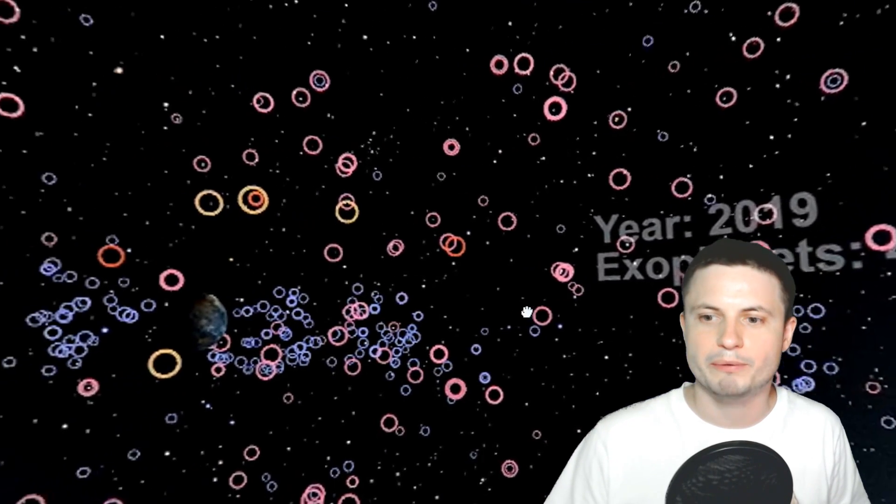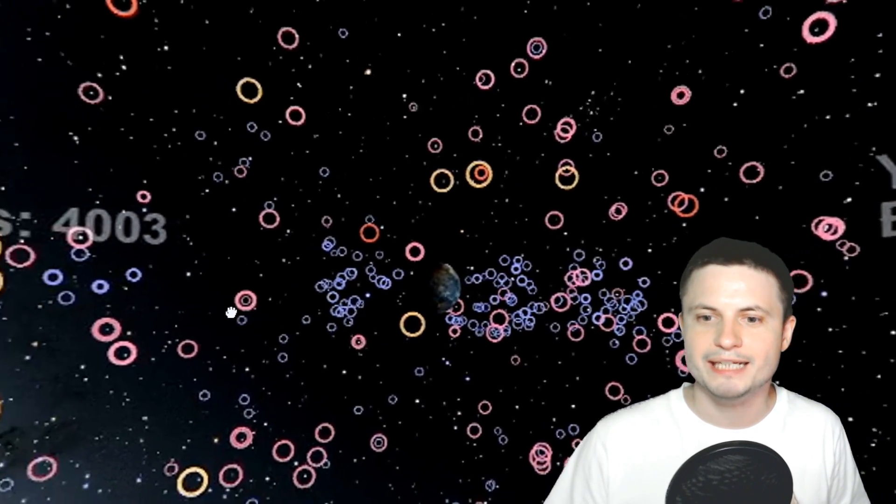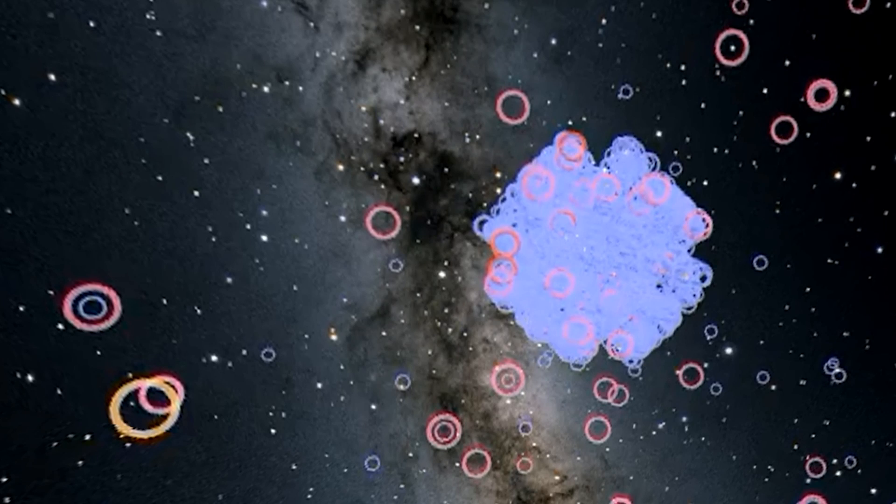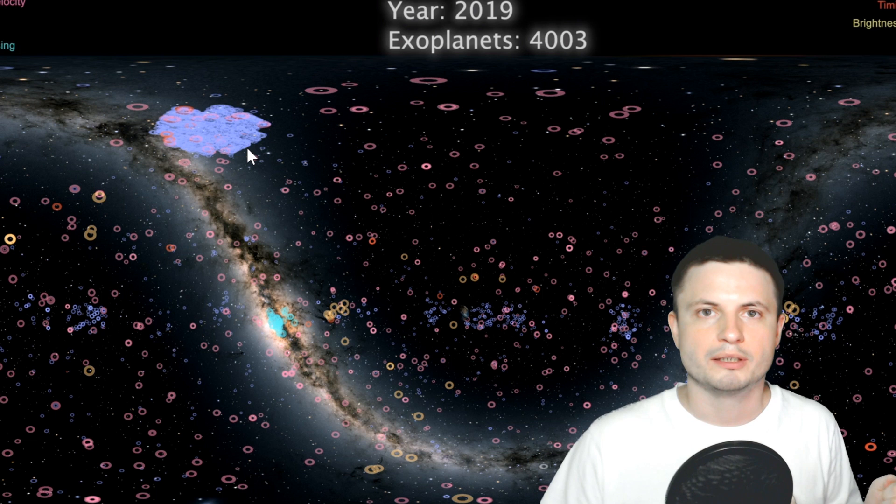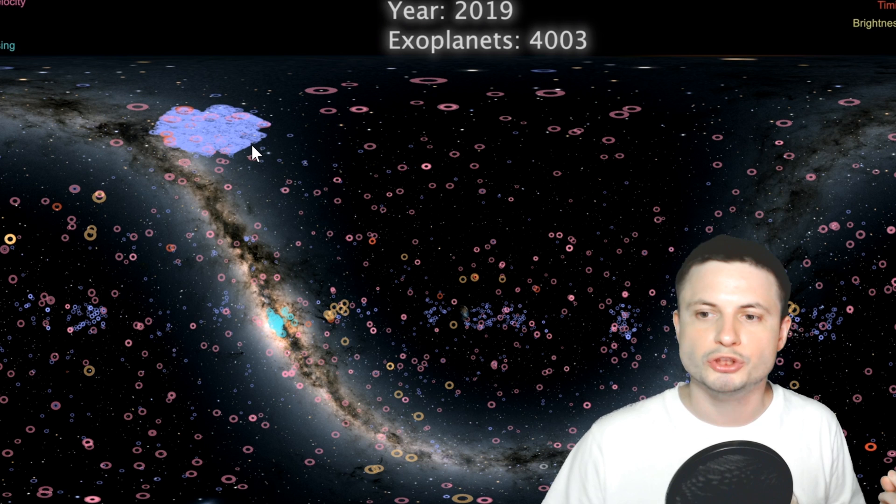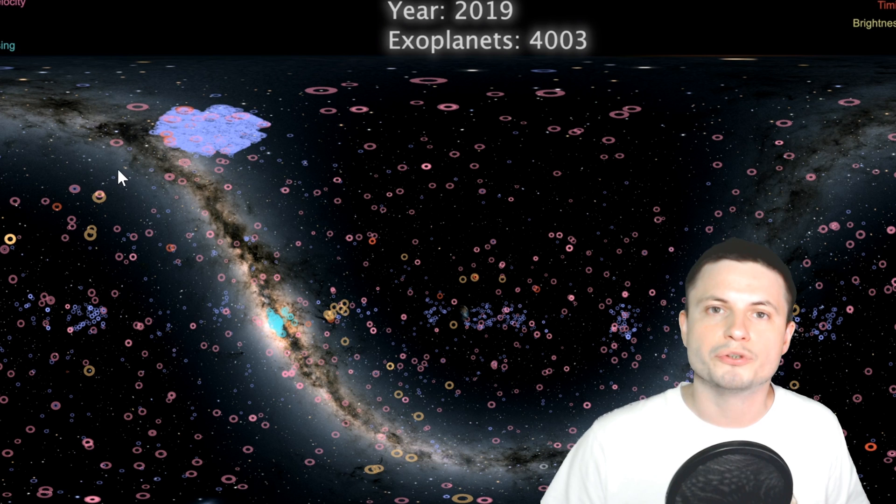Right here 2019 when over 4000 planets were discovered and you can kind of see how much stuff is around us. This right here is the Kepler mission because Kepler, the first version of Kepler K1, was actually looking at the night skies only in very specific locations and this is where we discovered over 700 first exoplanets and that was basically the largest discovery to date.